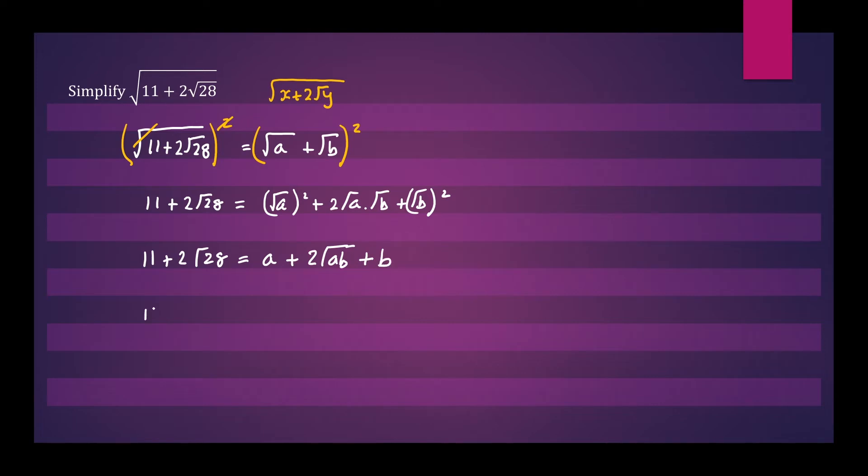So let's rearrange a bit. Again, 11 plus 2 root 28 equals a plus b plus 2 root ab.